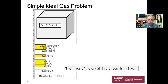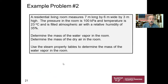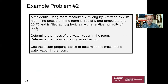Example two is a little tougher: atmospheric air in exactly the same room. Same dimensions, same system pressure, same temperature, but filled with atmospheric air at a relative humidity of 35%. Determine the mass of water vapor in the room and the mass of dry air using the steam property tables.